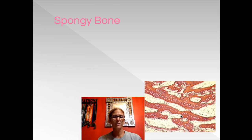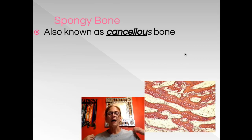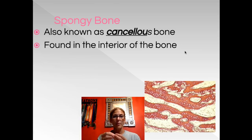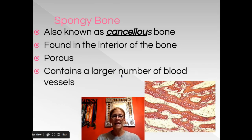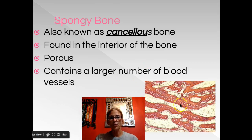This bone material looks much different from the circular compact bone material we just looked at. This is called spongy bone, also called cancellous tissue — I will almost always refer to it as cancellous tissue, so you want to recognize either name. Compact bone is found on the outside of bone protecting it; you're going to find cancellous tissue on the inside. There are lots of spaces in this bone tissue — it's very porous. That's how it gets its name: sponges have many pores.